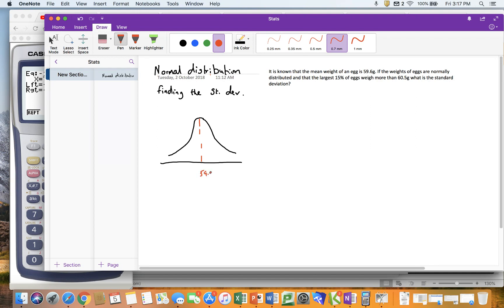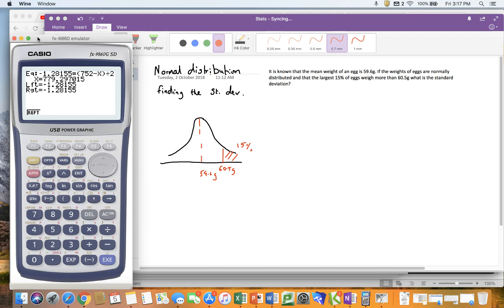I'm told the largest 15%, so the largest 15% will be over here and they weigh more than 60.5 grams. So I'm expecting a fairly small standard deviation here. Same as last time, when I go to normal and I go to distribution, I go to inverse normal.